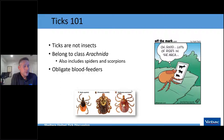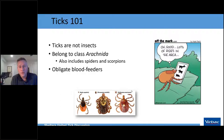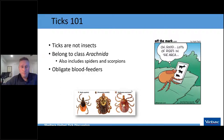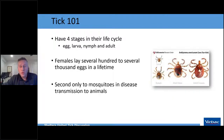Ticks are not insects. The adult tick has four legs, which puts them in the same class as scorpions and spiders. Younger stages — larvae and nymphs — have six legs because they're immature. Ticks are obligate blood feeders; they cannot progress to the next life stage without feeding on blood. Note that it's the female mosquito, not the male, that feeds on blood and transmits disease.